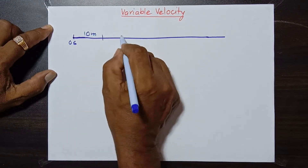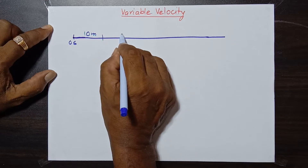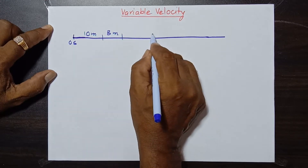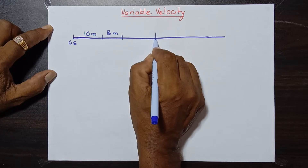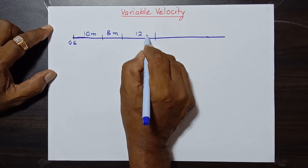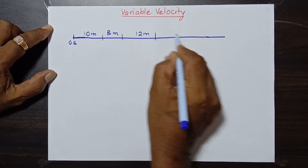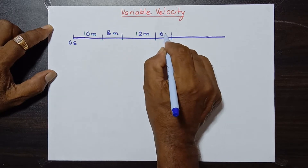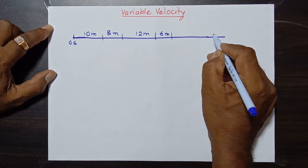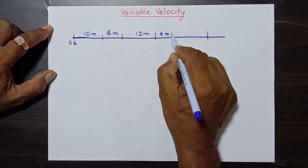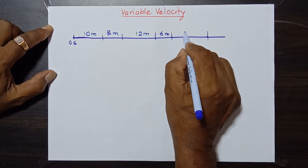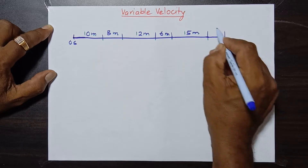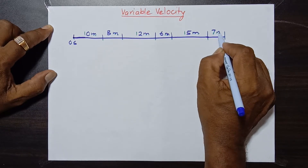At the end of another one second, let's say it covers less distance — that is only 8 meters. In another second, let's say it covers 12 meters distance. And another time it covers 6 meters distance. And again, it covers let's say 15 meters distance. And lastly, let's say 7 meters distance.